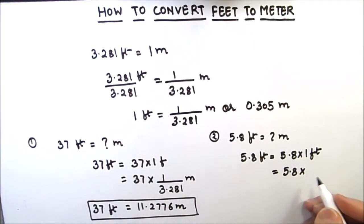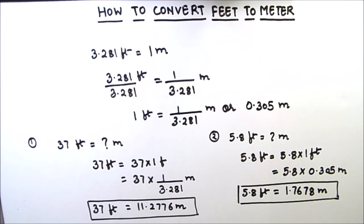Which is equal to 1.7678 meters. So this is how you can convert from feet to meter. For converting from feet to meter, you just need to divide the feet quantity by 3.281.